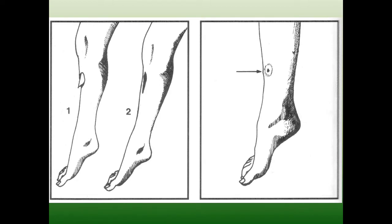Open fractures can present with a small minimal wound made by a bone fragment piercing the skin from inside, or a wound made by an external object penetrating to the bone. The latter involves greater contamination and infection risk. There is a specific classification for open fractures, which will be discussed further.